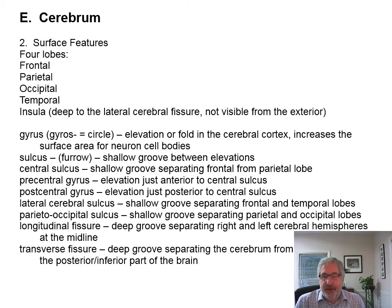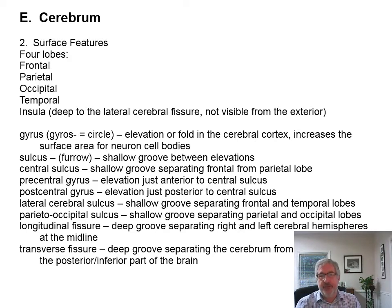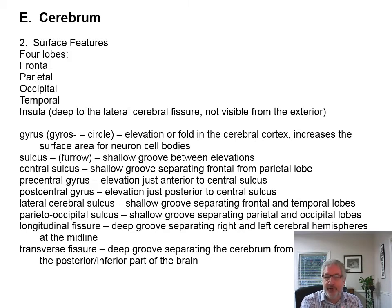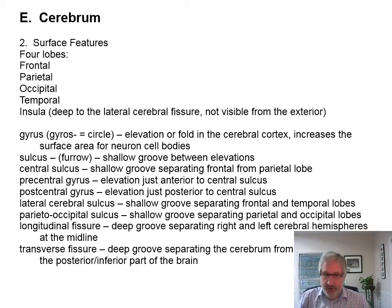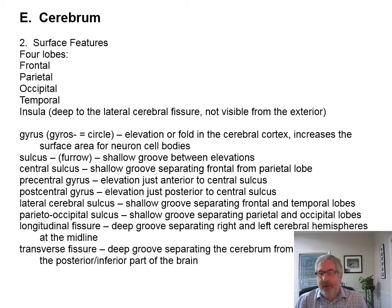You can't see the insula from the outside. You have to pull that lateral fissure apart to see the insula inside. The gyrus and sulcus — central sulcus — they have precentral gyrus and postcentral gyrus. And then we have the lateral sulcus, that's the deep groove separating the frontal and temporal lobes.